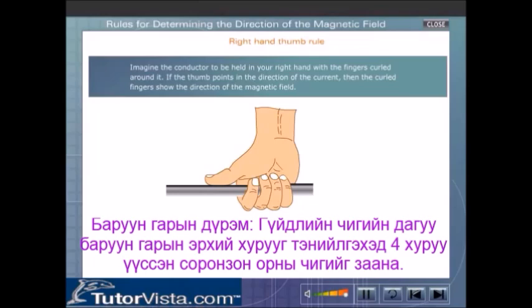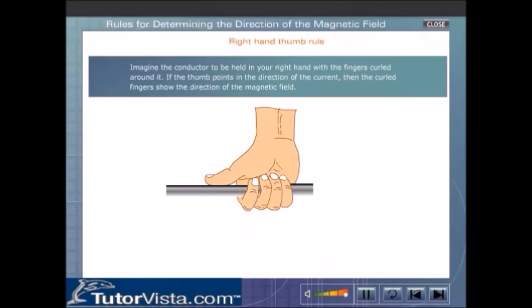Right Hand Thumb Rule. Imagine the conductor to be held in your right hand with the fingers curled around it. If the thumb points in the direction of the current, then the curled fingers show the direction of the magnetic field.